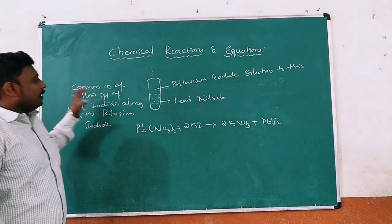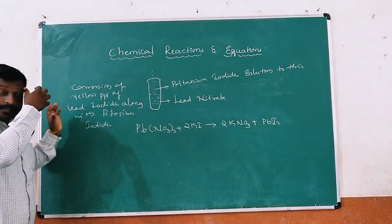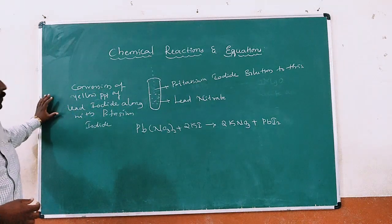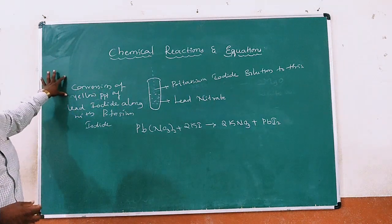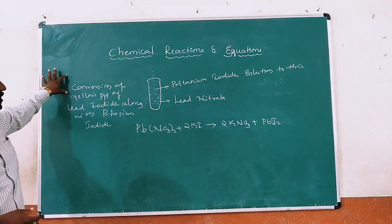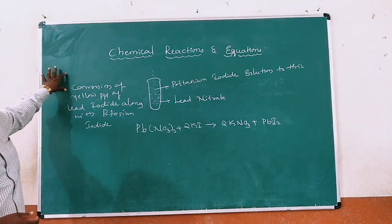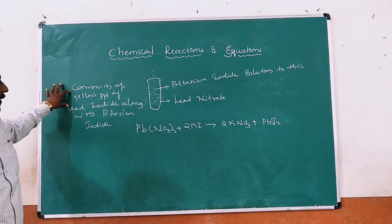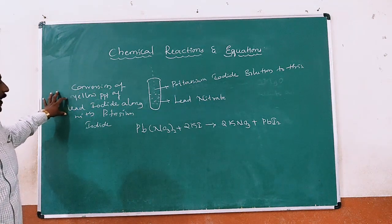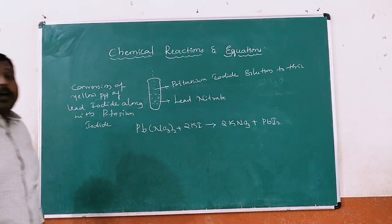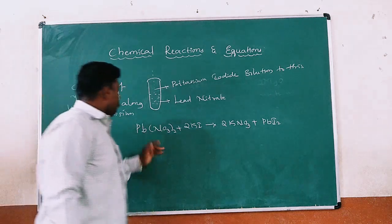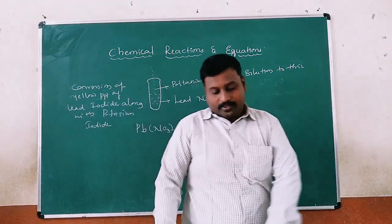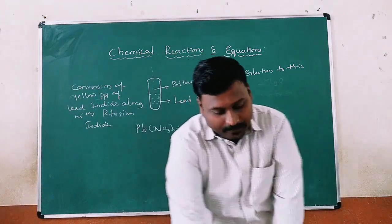In this activity, our observation is clear: formation of a yellow precipitate of lead iodide along with potassium nitrate solution.